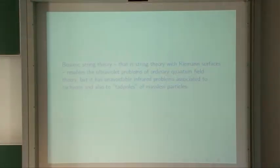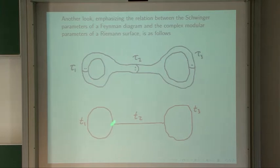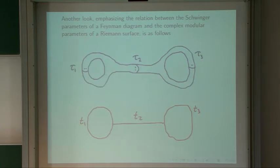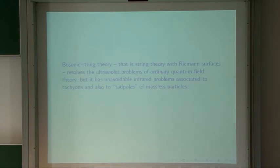Bosonic string theory is based on Riemann surfaces. It resolves the ultraviolet problems of ordinary quantum field theory because the ultraviolet problems arise when the t's are small. But in Riemann surface theory there's no such thing as the taus becoming small — when they become small, there's a better description. In the moduli space of Riemann surfaces the taus never become small, so there's no ultraviolet problem. However, bosonic string theory has unavoidable infrared problems associated to tachyons and also to tadpoles of massless particles.